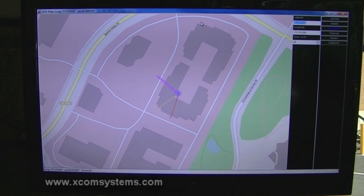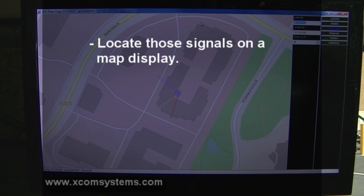The XCOM Mobile RF Spectrum Monitoring and Emitter Location System can also be used to determine the arrival direction of signals of interest. Using the system's high-resolution GPS-based moving map display, emitters can be quickly located.